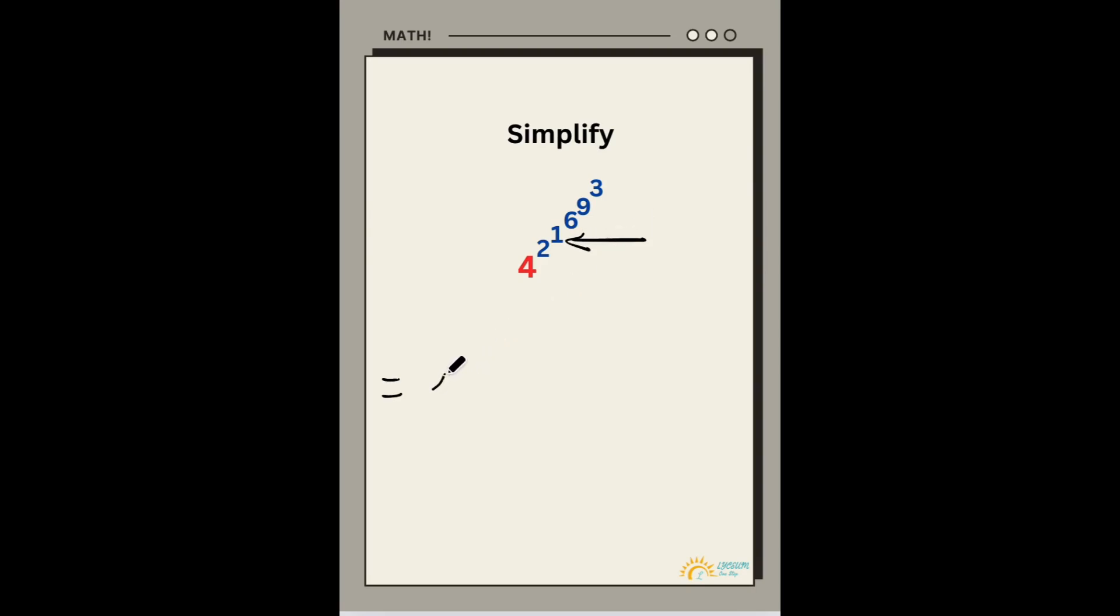We all know that is going to equal 1. So anything, no matter what this number equals, this is going to be 1. This saves a lot of work for us, and this simplifies to 4 to the power of 2 to the power of 1, which just equals 4 to the power of 2, which gives us our final answer of 16.